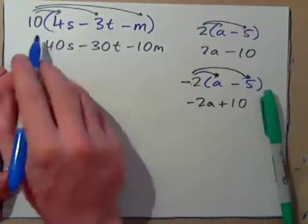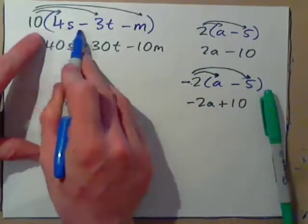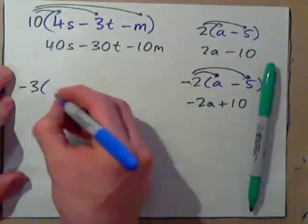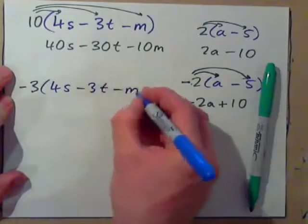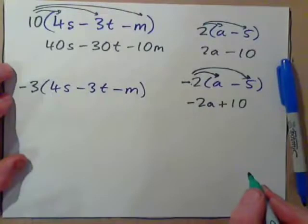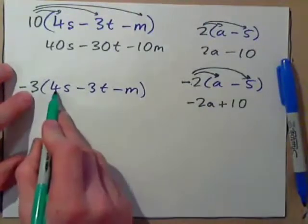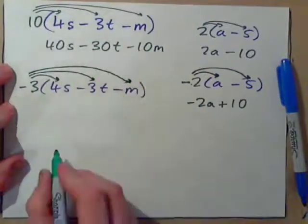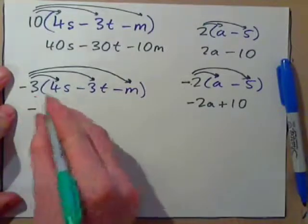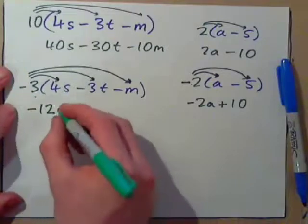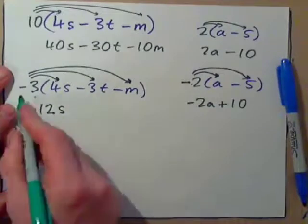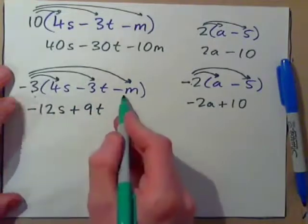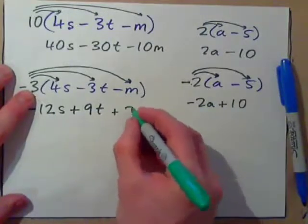Or think about it this way: for 10 clients you increased Shell stock by 4, decreased Texaco by 3, and decreased Microsoft by 1. If you wanted to cancel that transaction for 3 clients — multiply everything by negative 3: negative 3 times positive 4S is negative 12S; negative 3 times negative 3T — negative times negative is positive — gives 9T; negative 3 times negative M gives positive 3M.